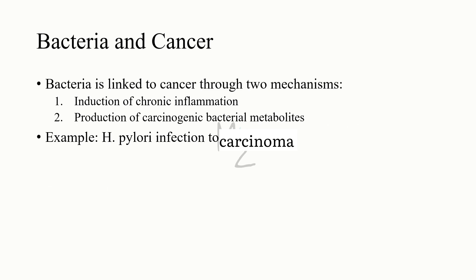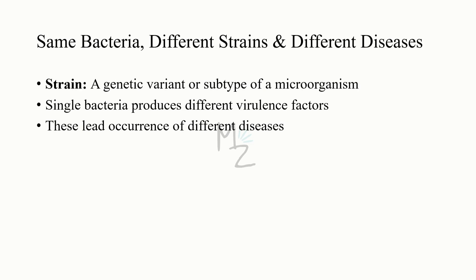Bacteria and cancer: traditionally, bacterial infections have not been considered major causes of cancer. Recently, it has been shown that bacteria can be linked to cancer through two mechanisms: induction of chronic inflammation, and production of carcinogenic bacterial metabolites. For example, Helicobacter pylori infection can convert into gastric carcinoma. Regarding same bacteria, different strains and different diseases: individual bacteria produce different virulence factors that give those bacteria the capability to cause different diseases.